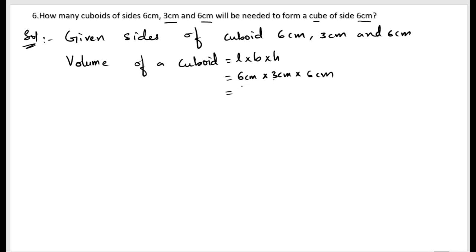We can multiply directly: 6 × 6 = 36. Then 36 × 3: 3 sixes are 18, 3 threes are 9 plus 1 is 10, giving us 108 cm³. This is the volume of the cuboid.